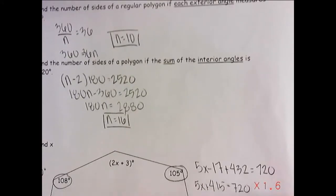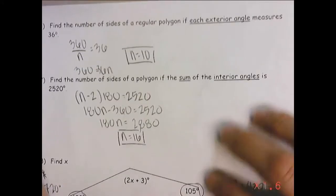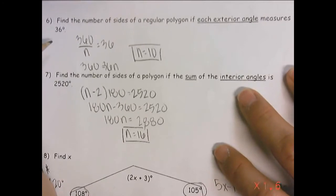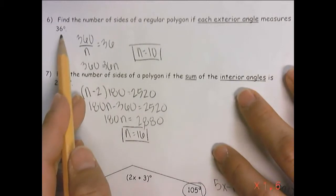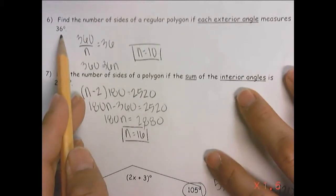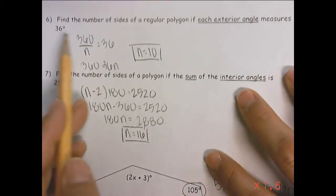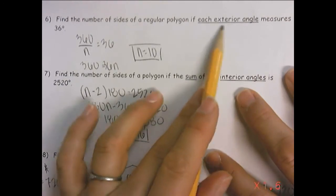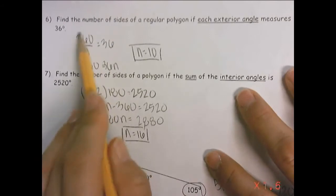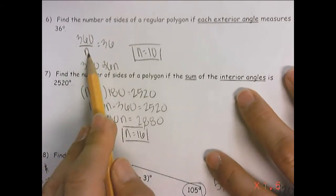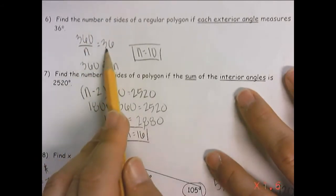Let's flip it over to the back side. Number six here. It says, find the sides of a regular polygon if each exterior angle measures 36. So remember, to find an exterior angle, the sum of them is always 360. So they did 360 divided by the number of sides, which we aren't sure of. And each of those exterior angles equaled 36.